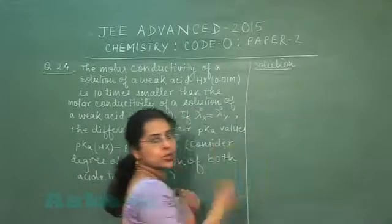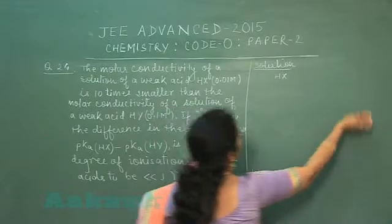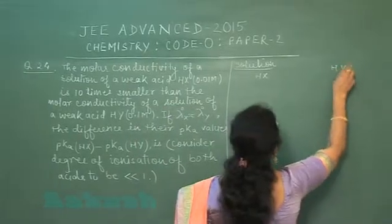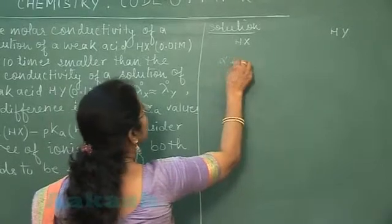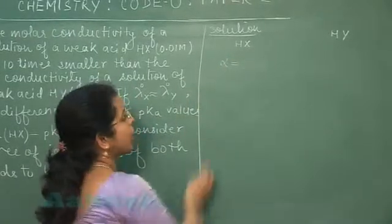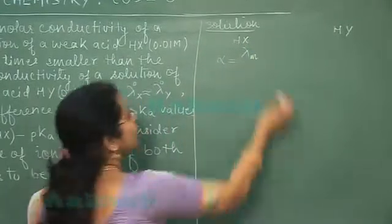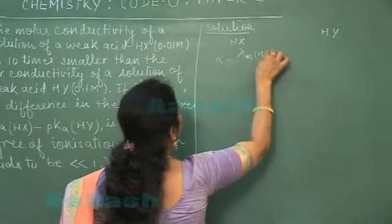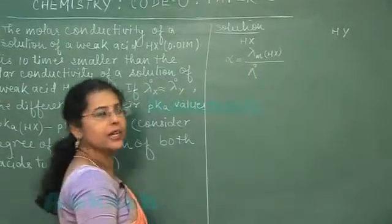In this question, both the acid taken are weak acid. First हमने लिया HX, दूसरी acid लिया HY. Weak acids are partially ionized and their degree of ionization is represented by alpha.